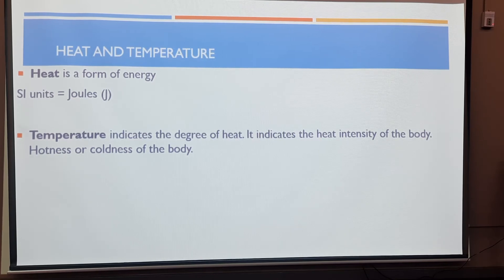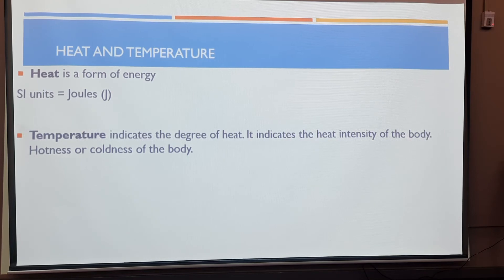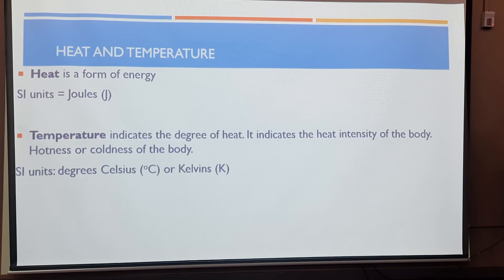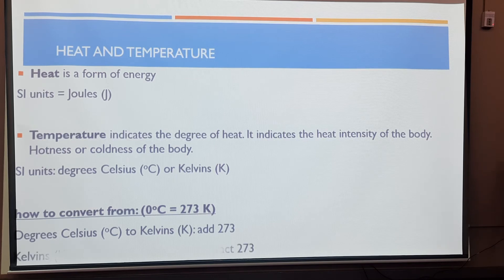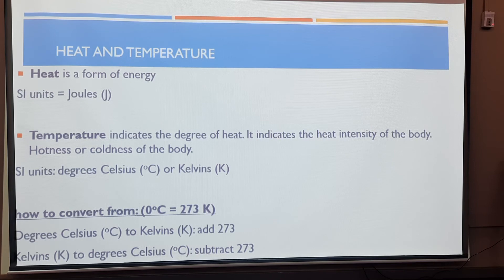You might have a substance with a very high intensity of heat, which will be high temperature. Or another substance might have a very low intensity of heat, and that will be low temperature. So temperature basically indicates the degree of heat — the heat intensity of the body, or the hotness or coldness of the body. There are two ways we can measure temperature: in degrees Celsius or in Kelvins. The Kelvin scale is called the thermodynamic scale, normally used in industries or furnaces where you have very high temperatures. For domestic use we measure in degrees Celsius.